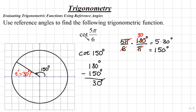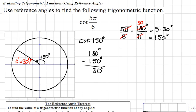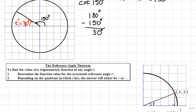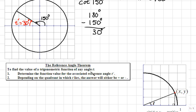To find exact value of cotangent of 5π over 6, we'll use the reference angle theorem, which is to find the value of a trigonometric function of any angle t. Determine the function value for the associated reference angle at t prime, and then depending on the quadrant in which the original angle t lies,